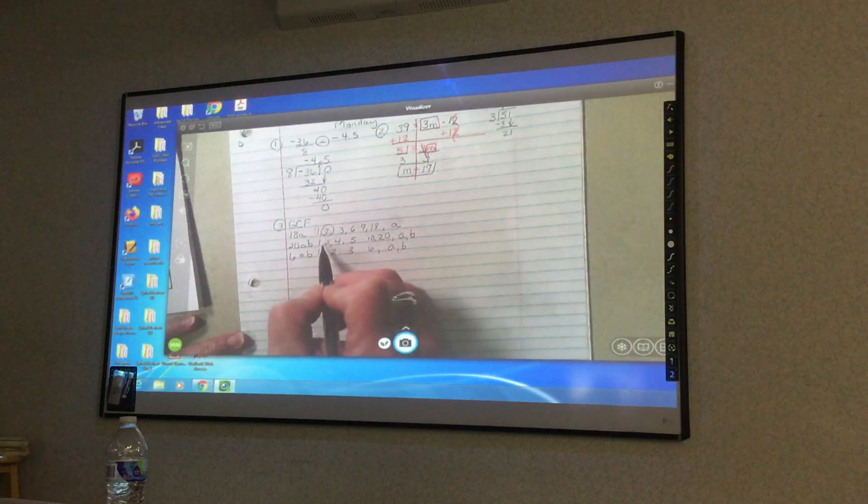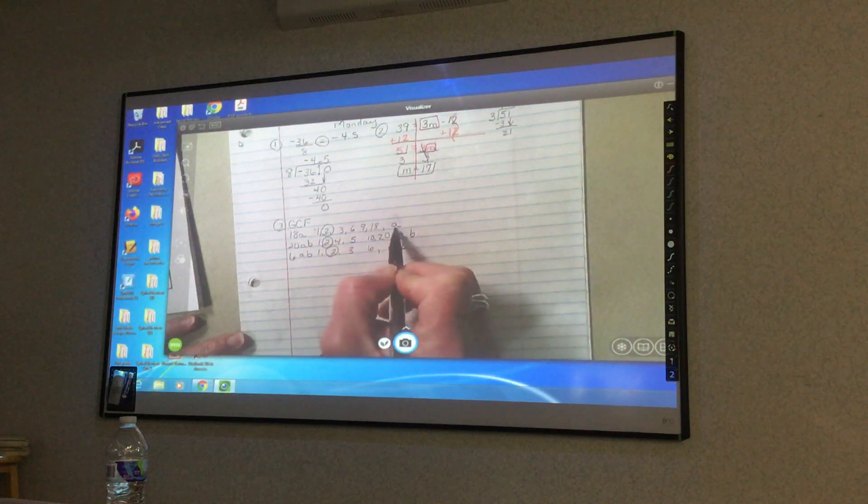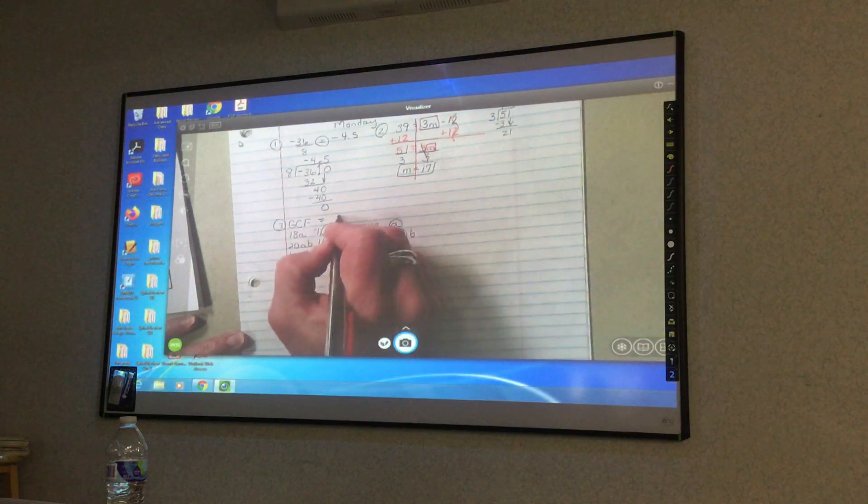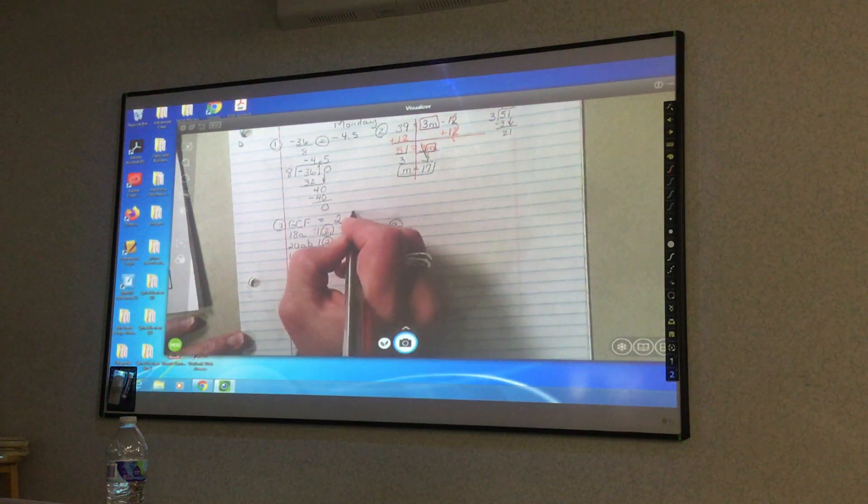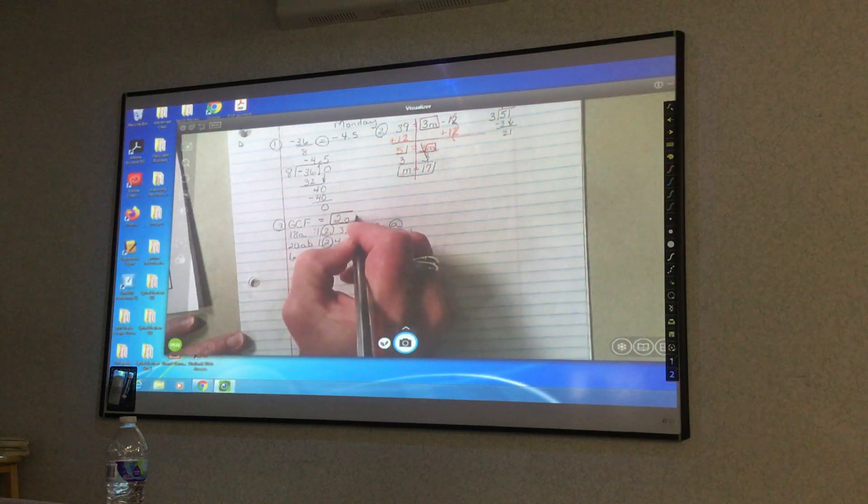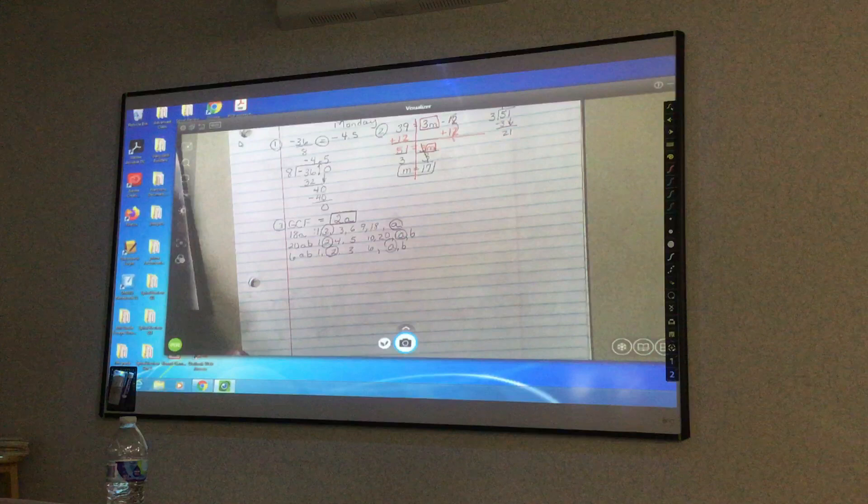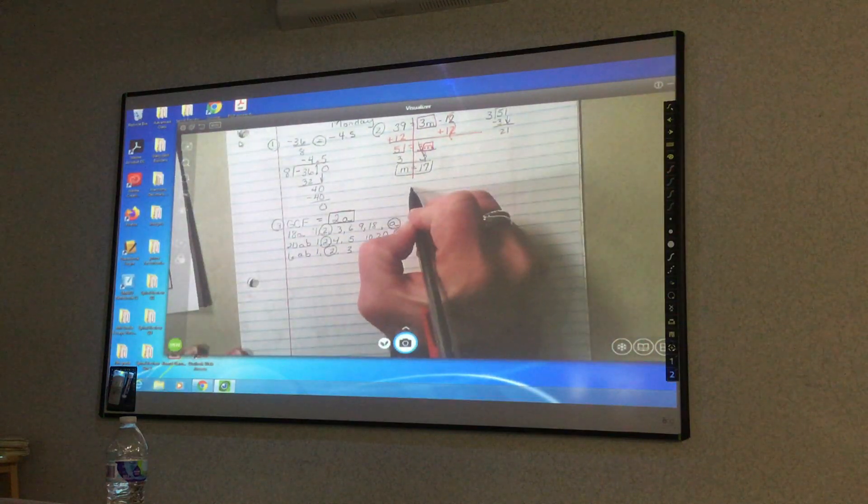Circle the only one they have in common, which is the twos and the a's. If you can get this without doing all of this work consistently, you don't have to show all the work. I put 2a.